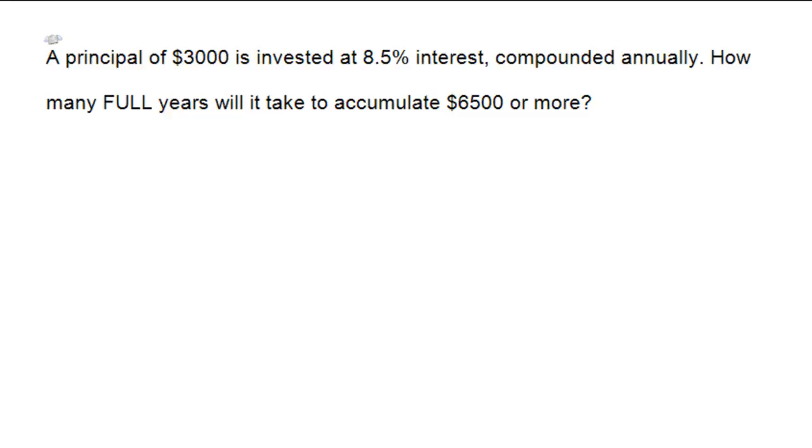The formula, just as a reminder for exponential growth, is of the form A equals some kind of initial amount, and then there's a multiplier here that usually is 1 plus an interest rate, and then that's raised to the number of years.